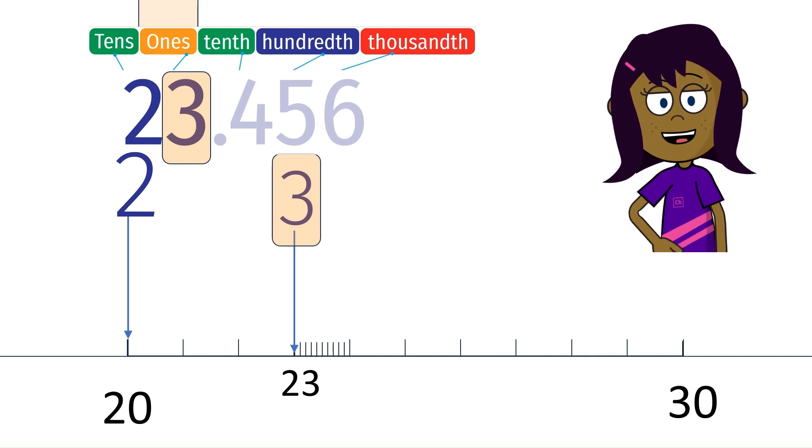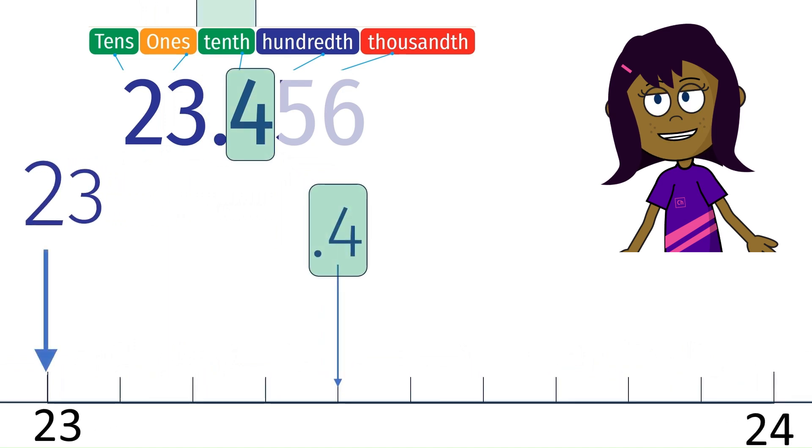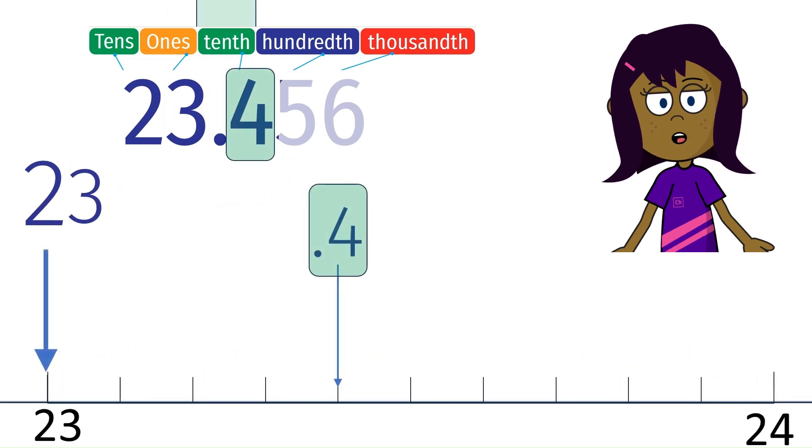Zooming in further to the tenth place, we have four tenths or 0.4. So we have location of 23.4.